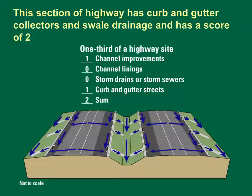This section of highway has curb and gutter collectors and a swale drainage system. Runoff flows along the paved gutter to a collector that drains the roadway. These swales are identified as having channel improvements. The channel lining score is zero because there are grassy swales, and the storm sewer score is zero because the collectors drain to the swale, although this could be debated. Also, if the gutters represent more than 50% of the flow length, this site may receive a channel lining score of one. This section could be scored as two, but depending on the gutters and design of the collectors, it could be scored as four.